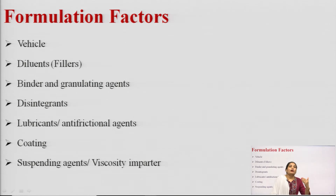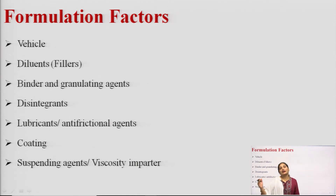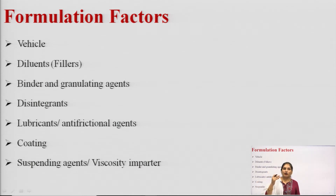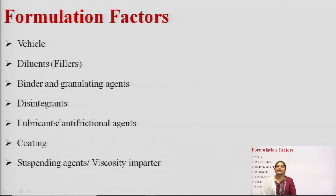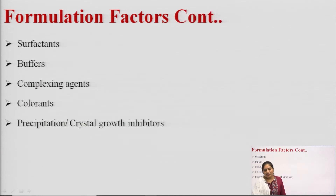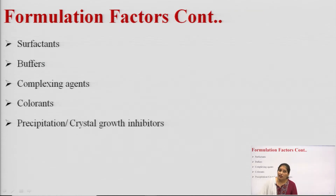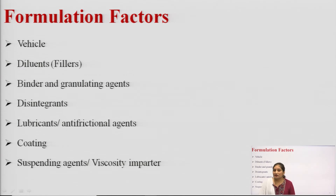Next we discuss formulation factors. Formulations contain excipients or adjuvants apart from the API — the active pharmaceutical ingredient. These adjuvants can affect the properties of the dosage form. Formulation factors include vehicle, diluents, binders and granulating agents, disintegrants, lubricants and anti-frictional agents, coating, suspending agents, viscosity imparters, surfactants, buffers, complexing agents, colorants, and precipitation or crystal growth inhibitors.